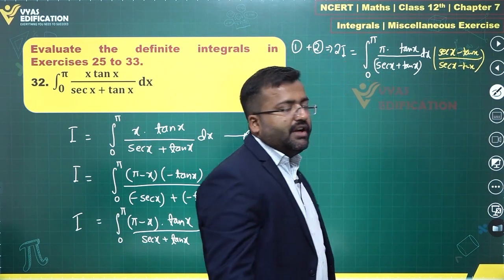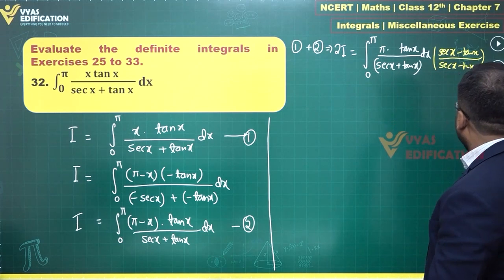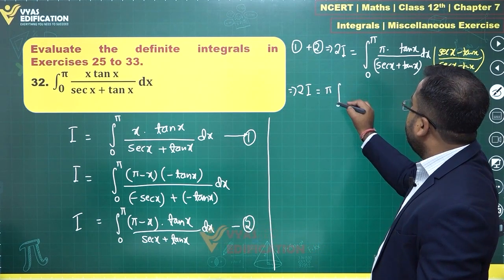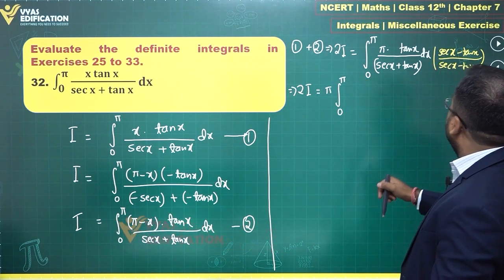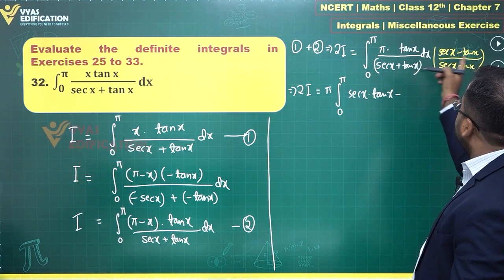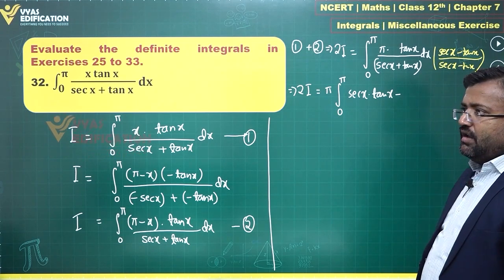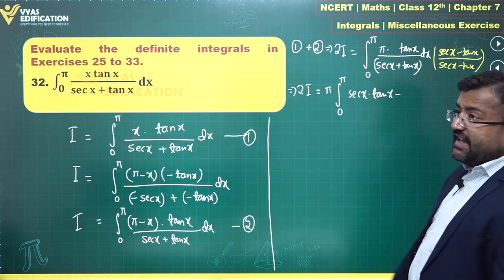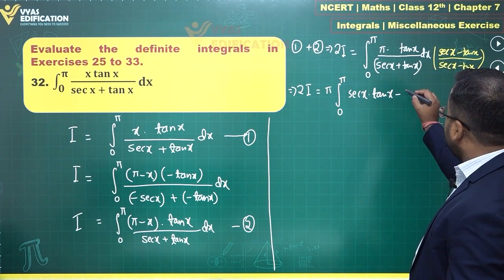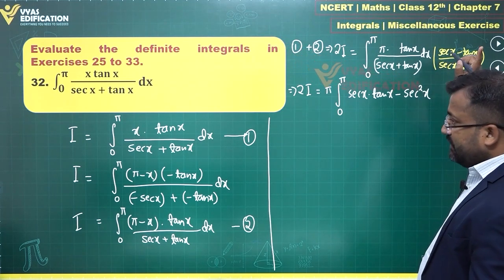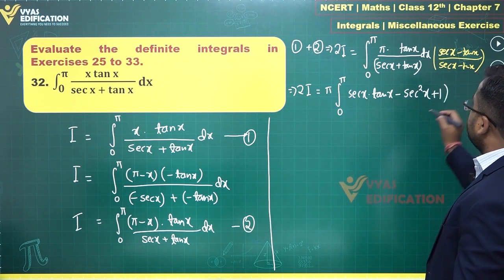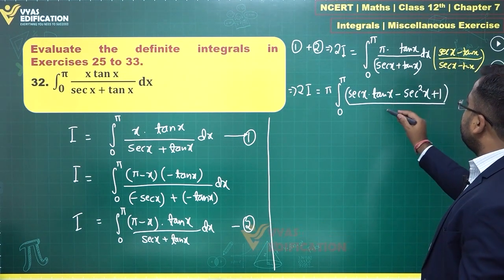After multiplying, 2I equals π times the integral from 0 to π of (sec x·tan x - tan²x) dx. Since tan²x is not simple to integrate directly, we rewrite tan²x as sec²x - 1, so the integrand becomes sec x·tan x - sec²x + 1, with denominator 1.